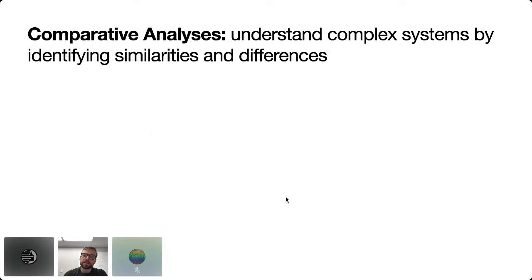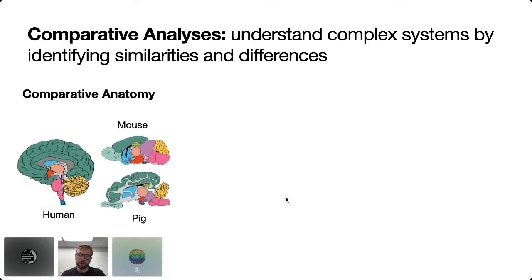Reverse engineering the brain and artificial networks is very challenging. It's particularly challenging if you only study them one at a time in isolation. There's a general principle that has been objectively successful in many areas of biology: we should adopt comparative perspectives. In neurobiology, we know an immense amount about different neuroanatomical structures and how they're homologous across animal species.